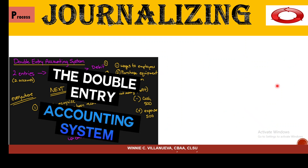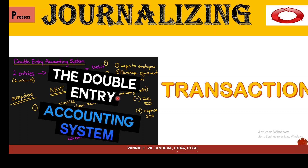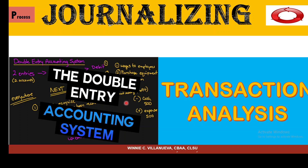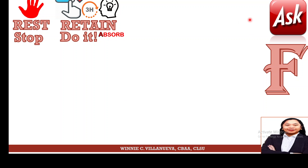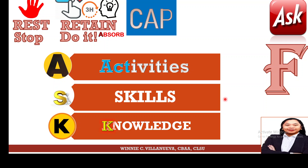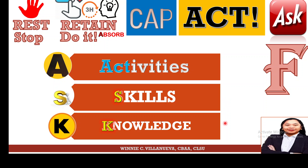With nine rules, the next thing to consider is that with every transaction there's always a double effect. That's why when you do transaction analysis, there will be a double-entry application of the accounting system. When there is a need to journalize, we need a set of activities to apply our knowledge and be equipped with the appropriate skills.